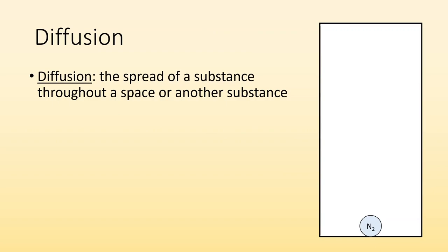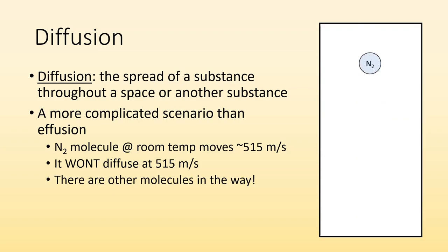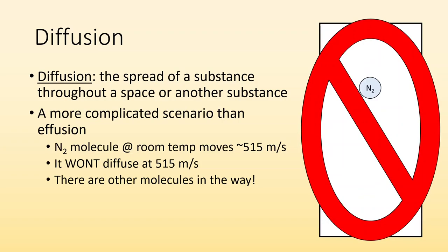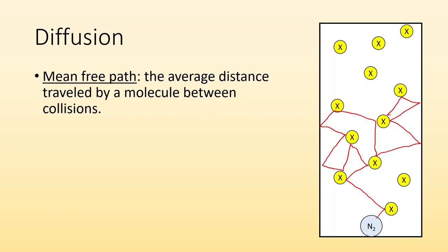All right, diffusion. Different. Diffusion is the spread of a substance throughout a space or another substance. So it's a more complicated scenario than effusion. For example, N2 molecule at room temperature moves roughly 515 meters per second. It's really fast but it won't diffuse at that speed. And why is that? Well, there are other molecules in the way, right? So as it's trying to move it's going to bump into other molecules. So as it moves it collides with these molecules and changes directions. So sometimes it gets bumped to the side. Sometimes it has to go backwards. Diffusion, there's stuff in the way.